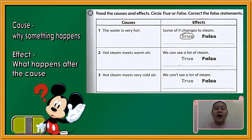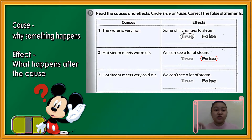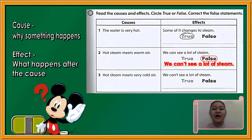Number two: the cause is hot steam meets warm air. The effect is we can see a lot of steam. Is it true or false? The answer is false. Because our answer is false, we have to change the effect. Instead of saying 'we can see a lot of steam,' we change it to 'we can't see a lot of steam.' We change the word 'can' to 'can't.'